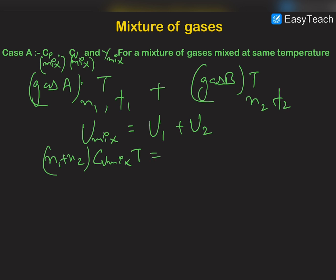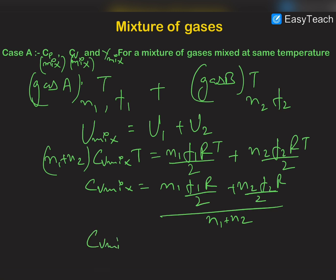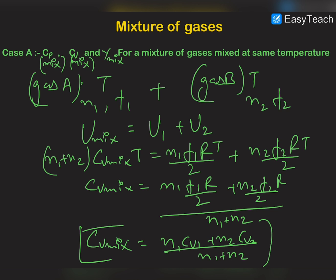Now U1 = N1 F1 R T/2 and U2 = N2 F2 R T/2. So we can say that Cv mixture will be equal to (N1 F1 R/2 + N2 F2 R/2) divided by (N1 + N2), and since F R/2 equals Cv, we get Cv mixture = (N1 Cv1 + N2 Cv2) / (N1 + N2). This is the expression for Cv mixture.